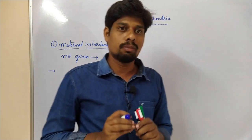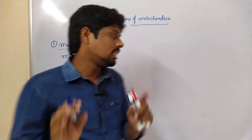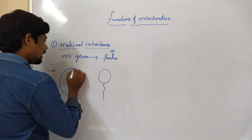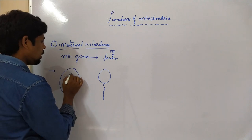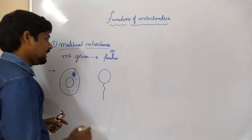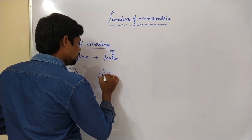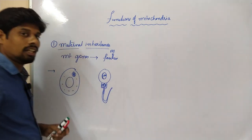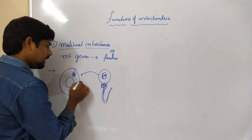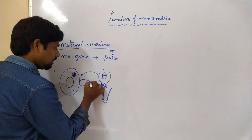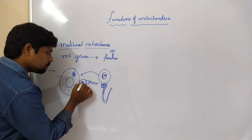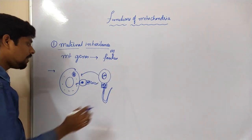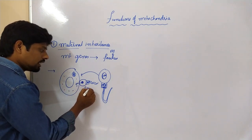Mitochondria are present in the cytoplasm, whereas nuclear material is present in the nucleus. The egg contains nuclear material and cytoplasm, and within that cytoplasm there is mitochondria. The sperm contains nuclear material in the head region and mitochondria in the middle piece. When the sperm fuses with the egg, the egg only receives the genetic material of the sperm, not the mitochondria from the sperm's middle piece.